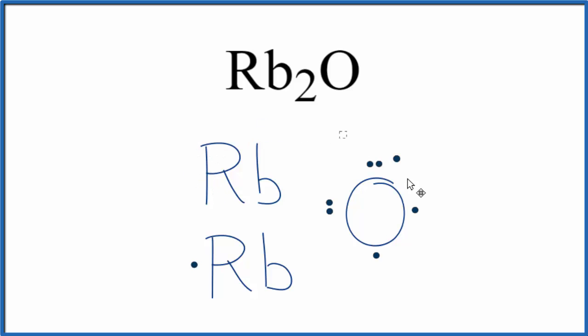So we take one from the rubidium here, and then one from this other rubidium, and now it has eight. It has an octet, which is very stable.